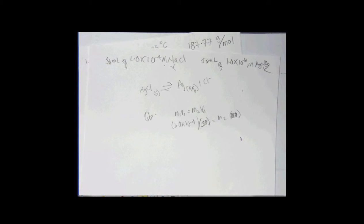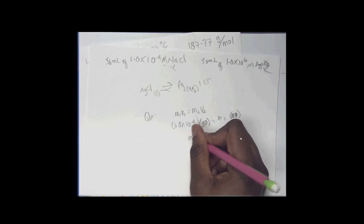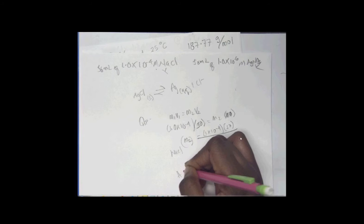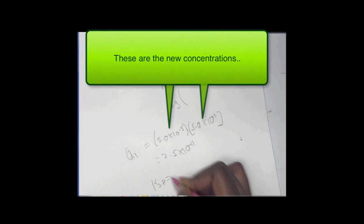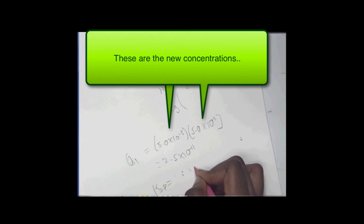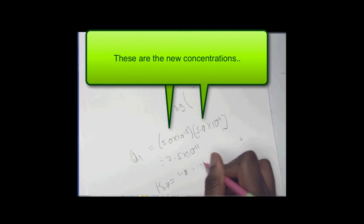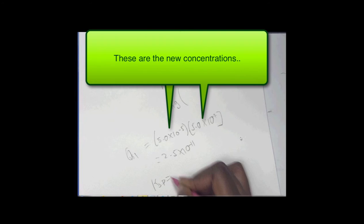Make me feel old when you call me sir. So M2 is equal to 5.0 times 10 to the negative 7 for both of them. It can be for both of them, right? Yeah. Ag is negative 7, Cl is negative 5.